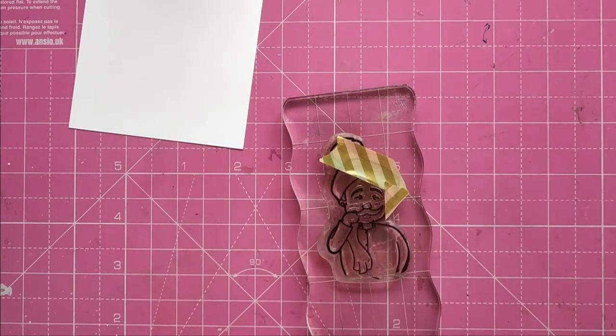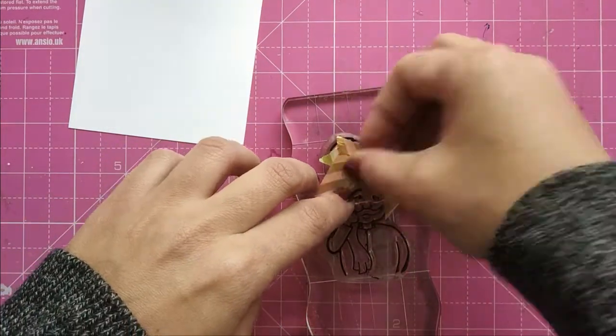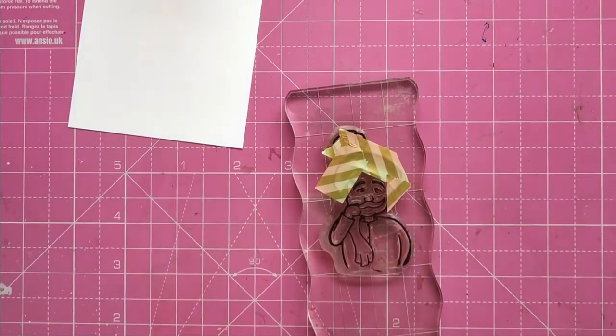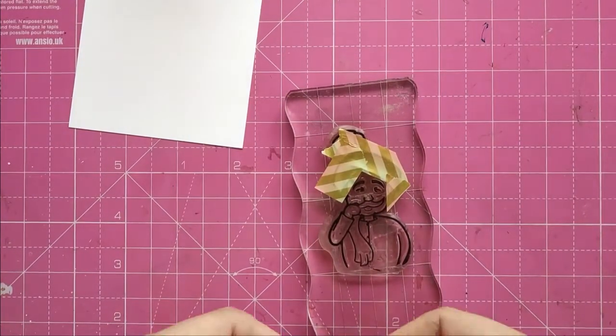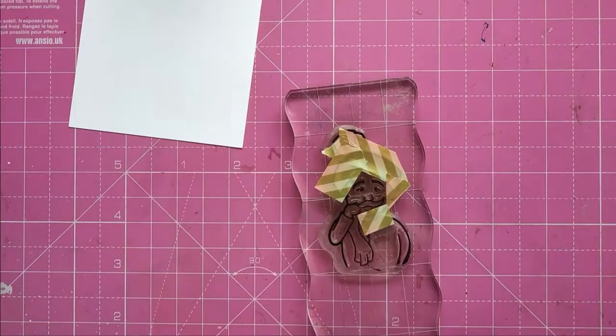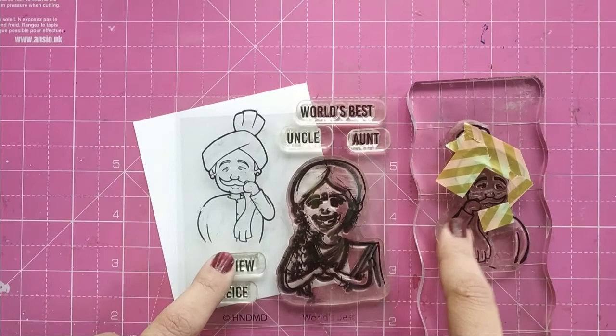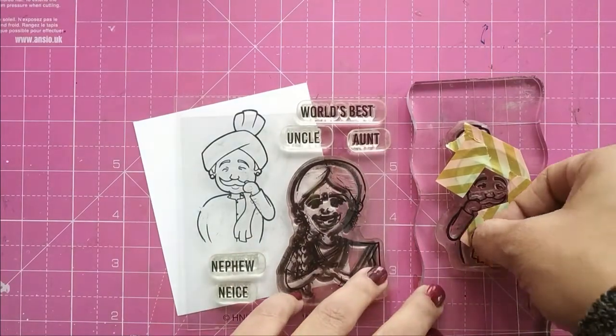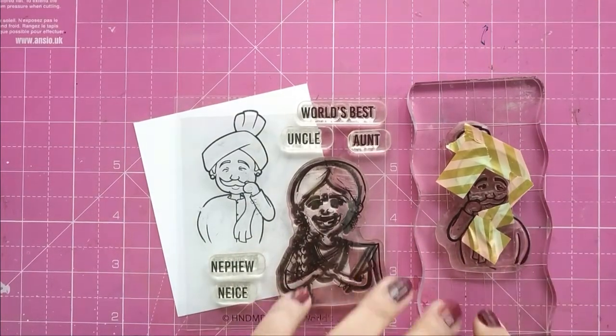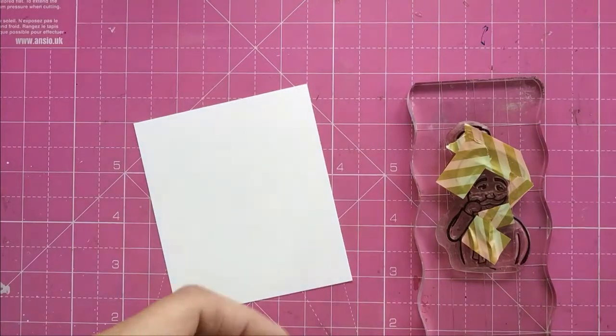With pieces of washi tape, I'm covering all the areas which I do not want on my stamped image. So I have masked his turban, his ears, now his chin. The arm will let it be, but yes, that part of the turban has to be masked.